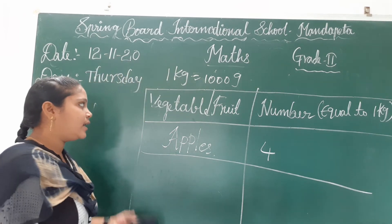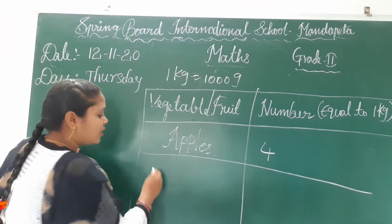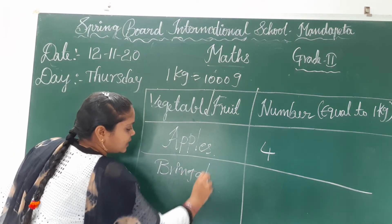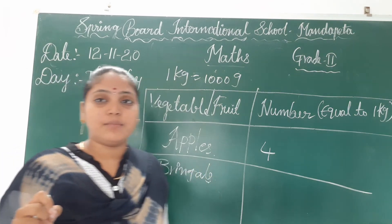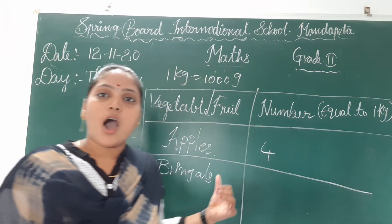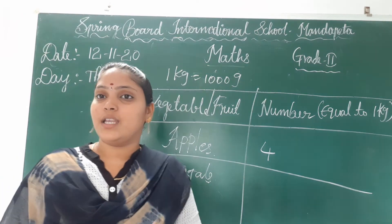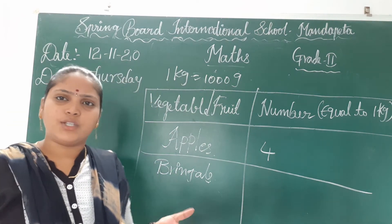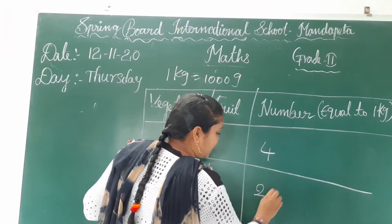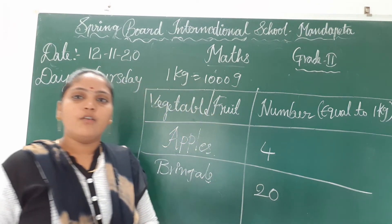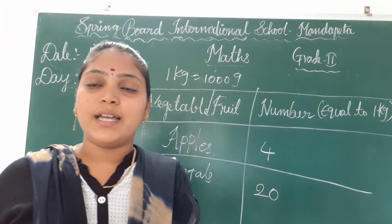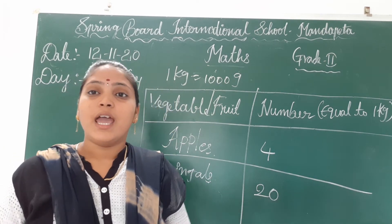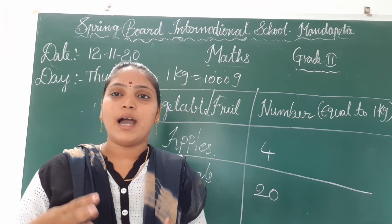Next, for vegetables — write brinjal. How many brinjals make just one kilogram? For example, nearly twenty. So twenty brinjals to make one kilogram. After that, take a balance and check: are these twenty brinjals exactly one kilogram, or below, or more than a kilogram?